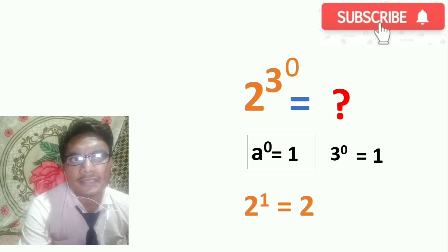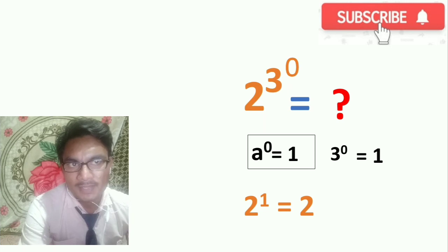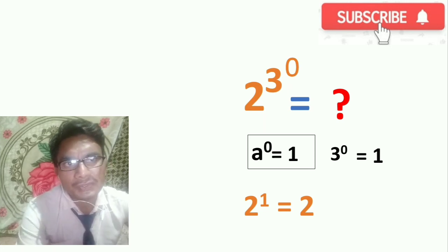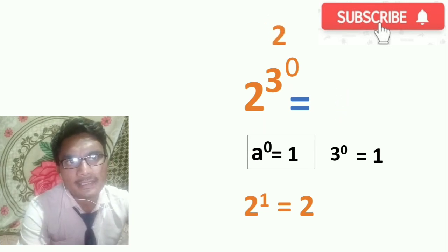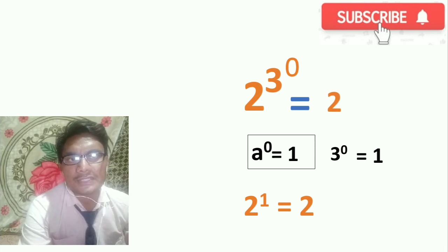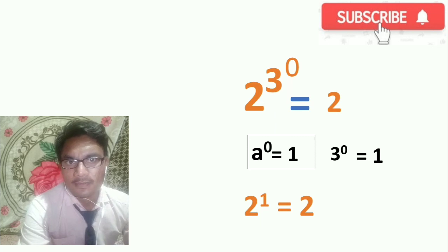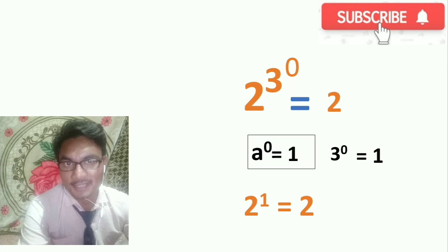2 raised to 3 raised to 0 is equal to 2. That's the final answer. So we got 2. In this way, 2 raised to 3 raised to 0 equals 2. Thank you.